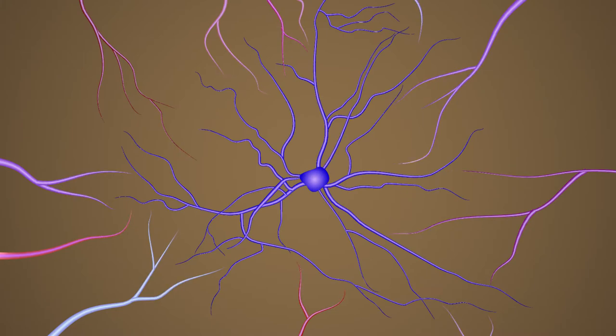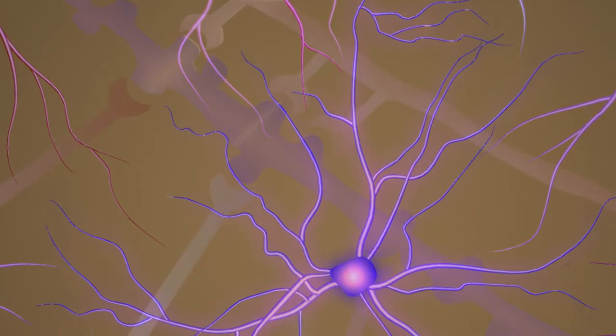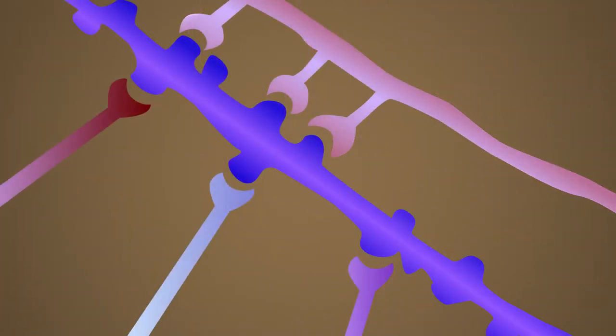This local functional synaptic clustering applies to a diverse set of inputs and appears to be a fundamental principle of dendritic organization. Future work should reveal more about the source of these clustered inputs and how these clusters arise during the development of neural circuits.